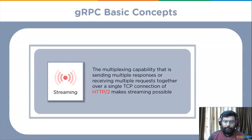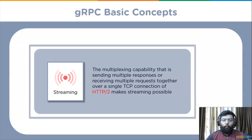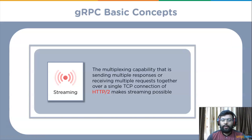The next concept is Streaming — another key concept of gRPC where many processes can take place in a single request. The multiplexing capability — sending multiple responses or receiving multiple requests together over a single TCP connection — is made possible by HTTP/2. The first type is server streaming RPCs, where the client sends a single request to the server and receives back a stream of data sequences.